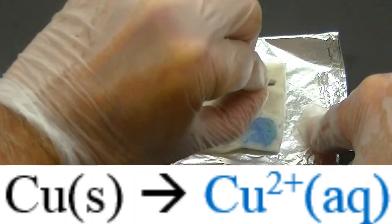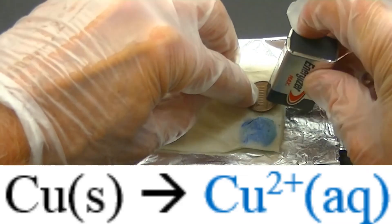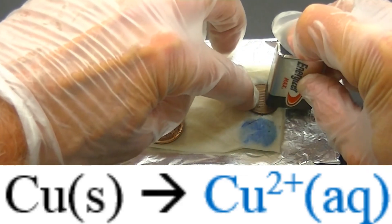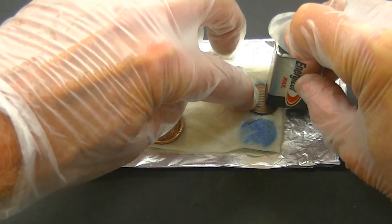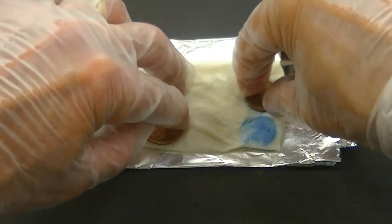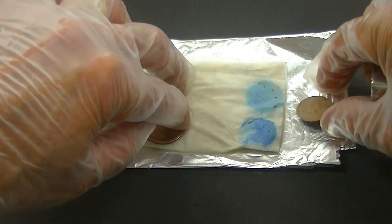This occurs because copper ions, which are blue in color, are formed at the interface between the coin and the top of the paper towel. I'm going to repeat this process a few times, and you'll note that blue spots are formed all along the paper towel.